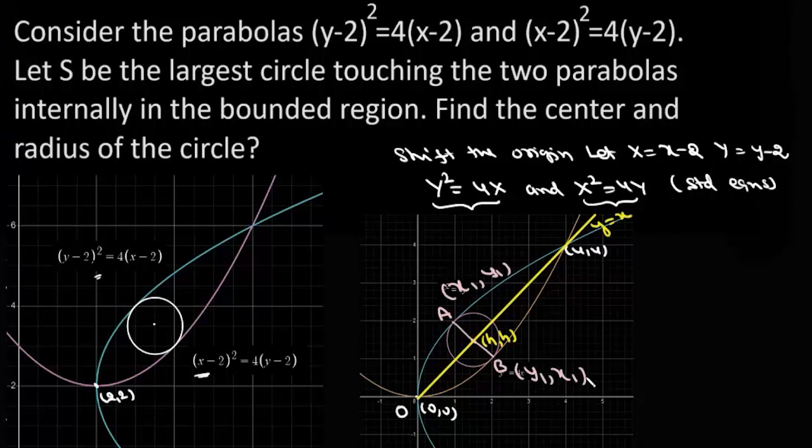And since AB is a diameter, the tangent at A will be parallel to the line y = x, so dy/dx at A must be equal to the slope of y = x which is 1. This A lies on the curve Y² = 4X.